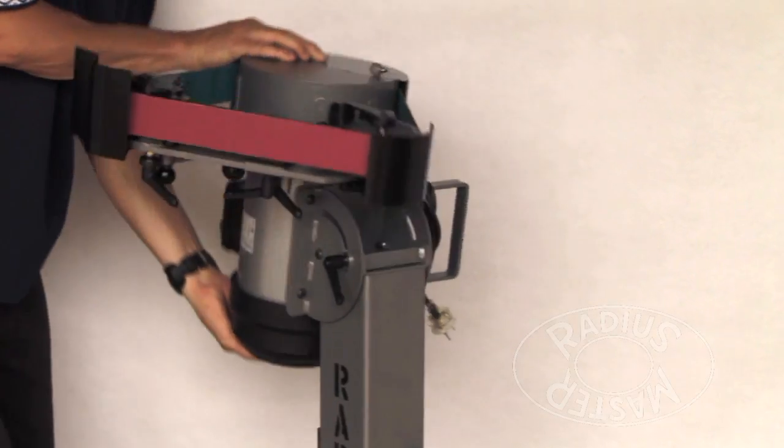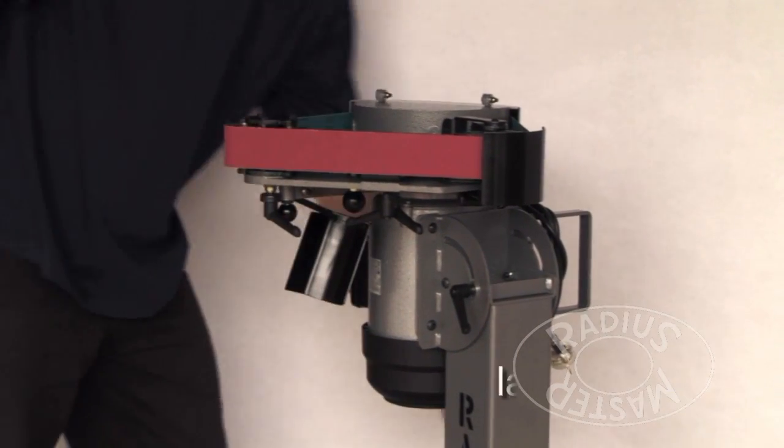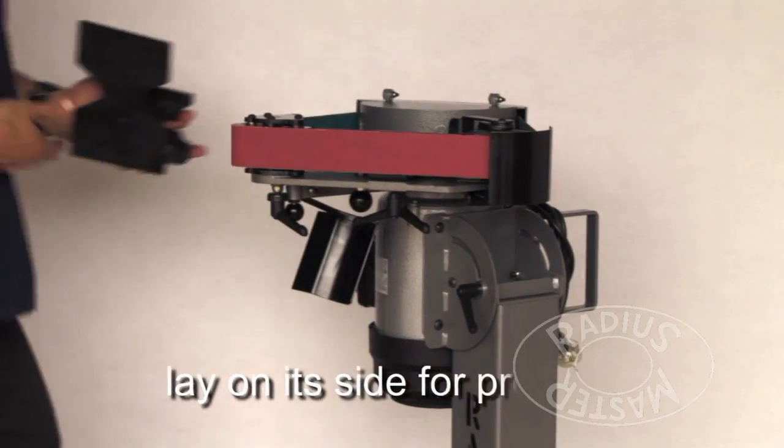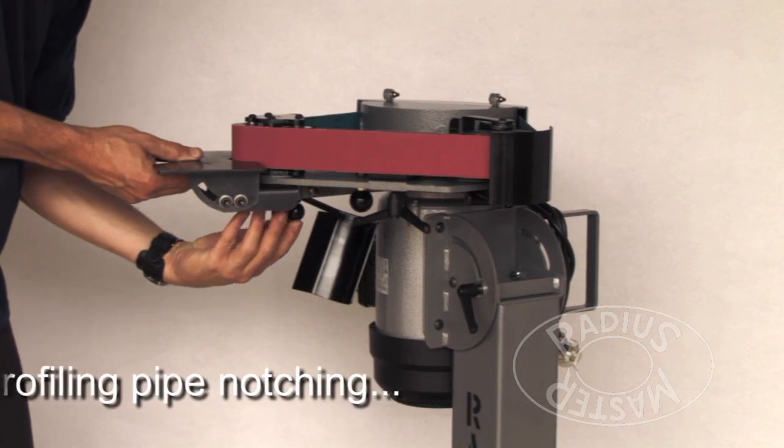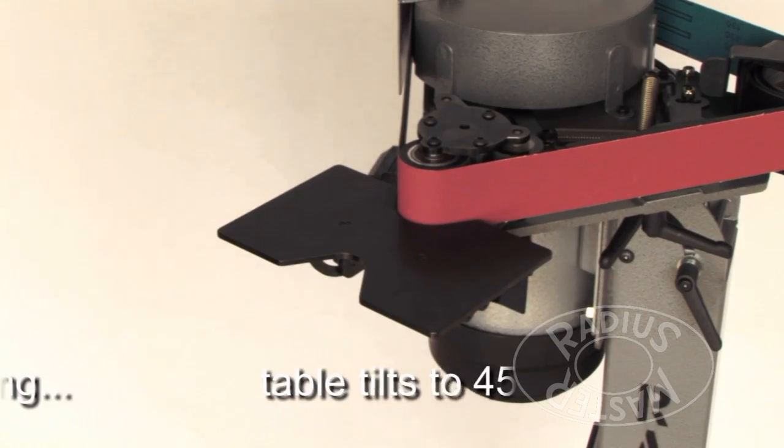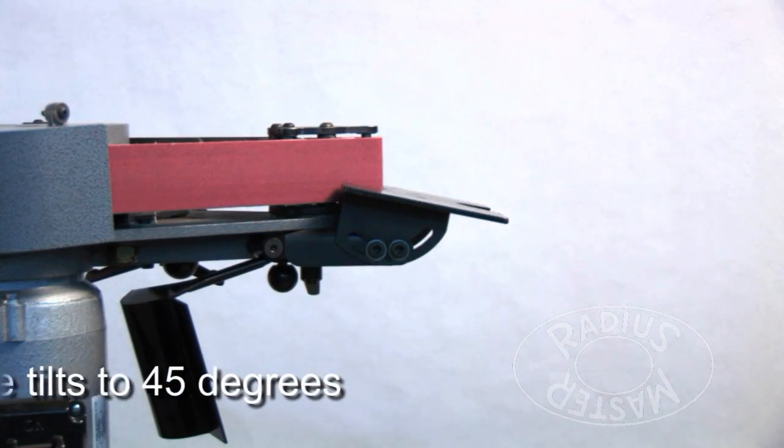The value of laying on side instantly converts it to a bobbin grinder, providing notching and accurate profiling of edges from square through to 45 degrees.